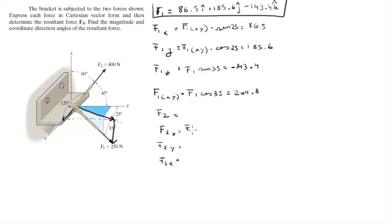Now F2 cosine of 120 is the X component because this is 120. F2 cosine of 45 is the Y component, it's the angle that it forms with the Y. And F2 cosine of 60 right here is the Z component.